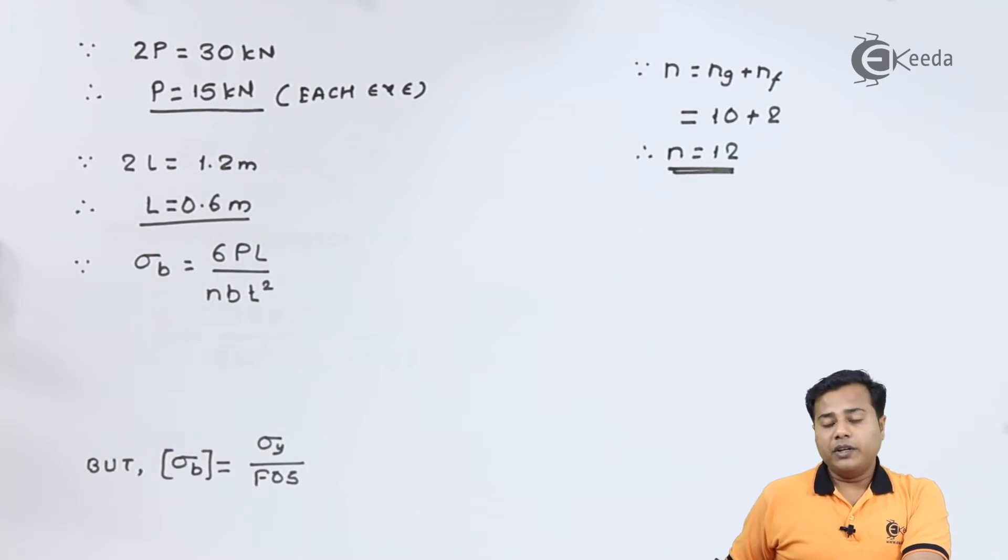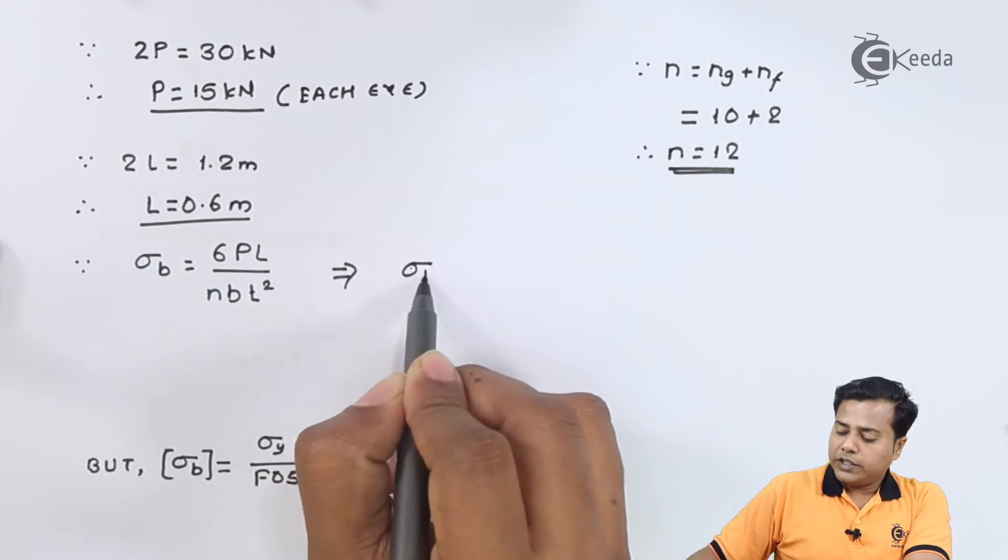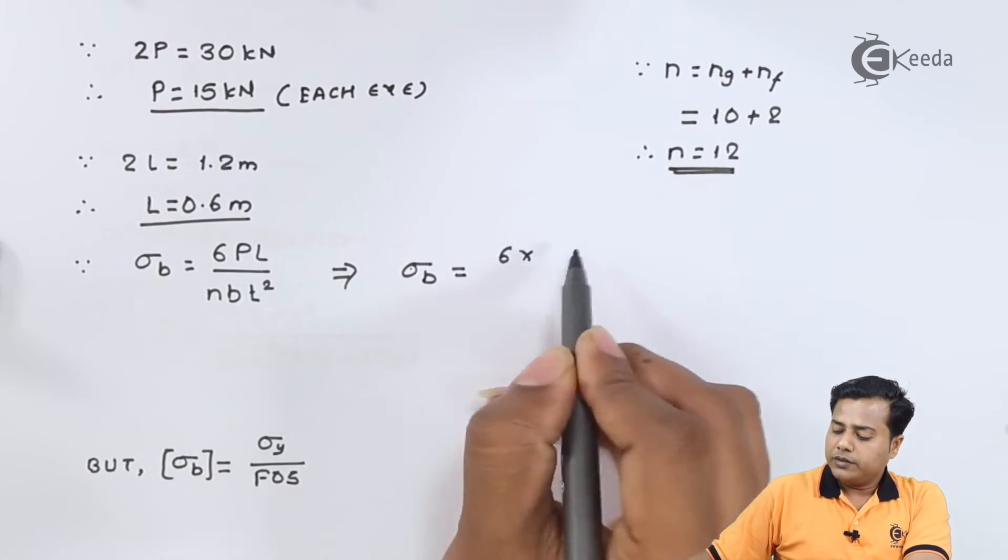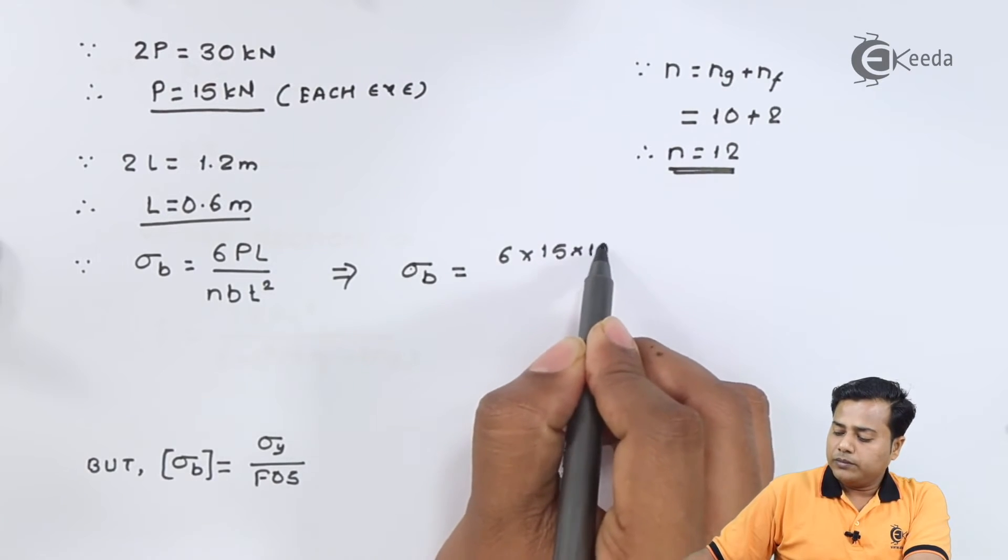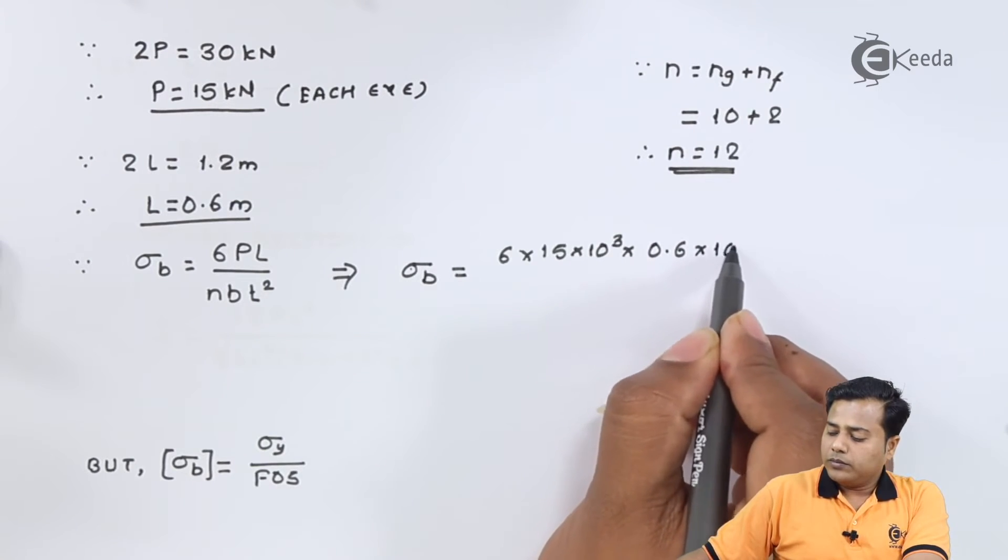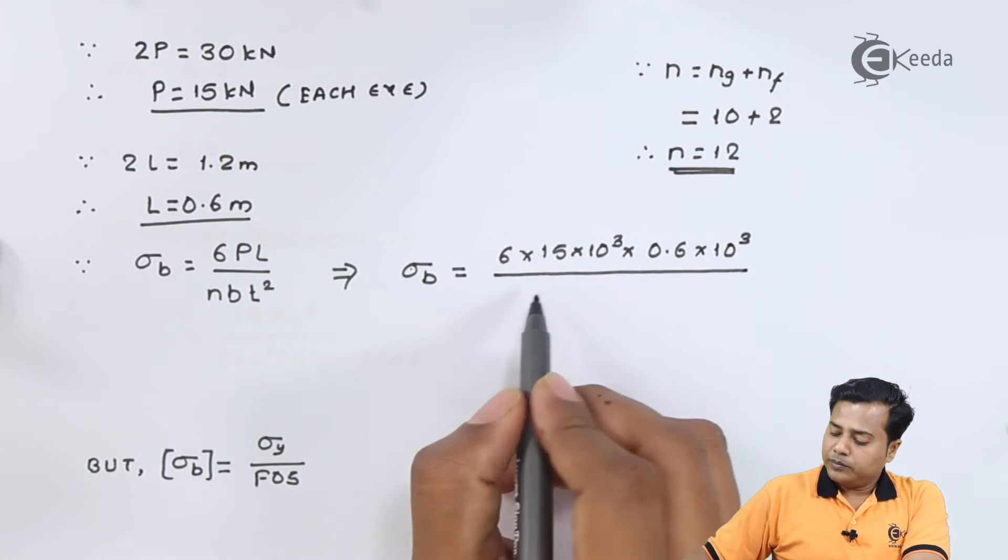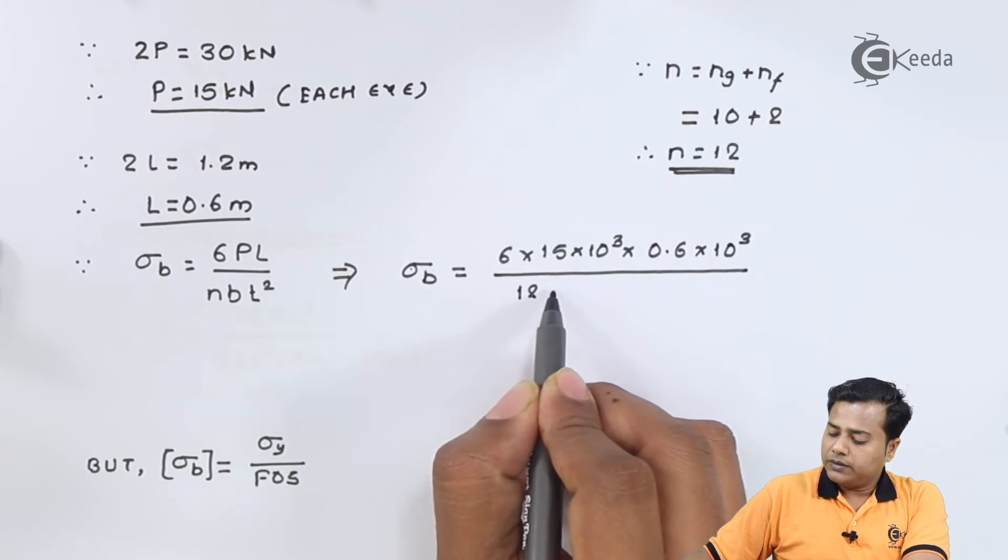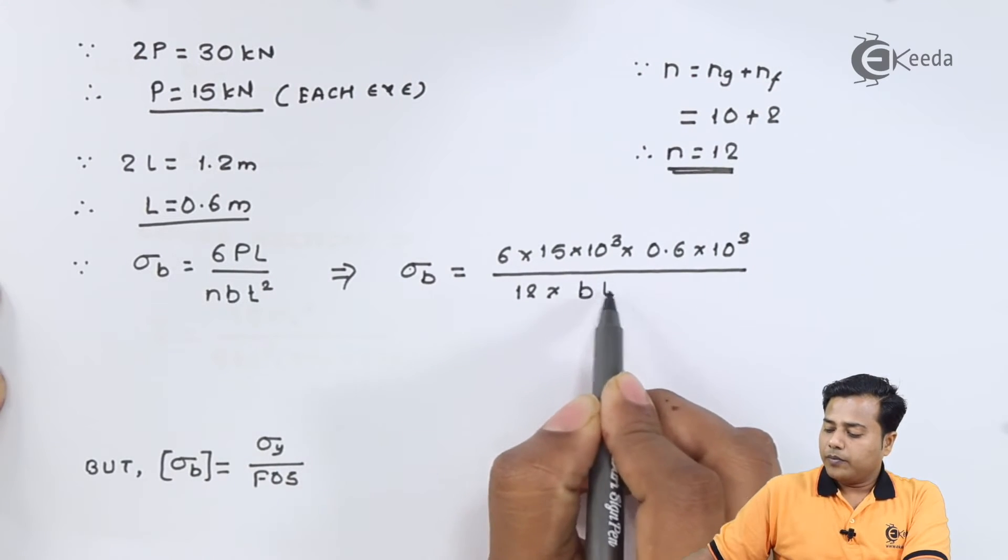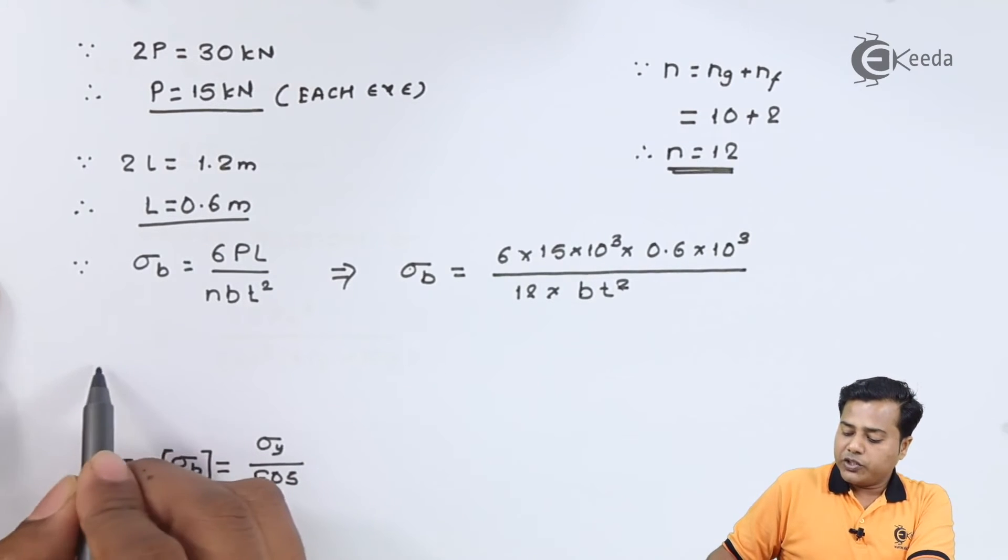We already know an empirical relation where the bending stress is equated with this particular factor and therefore sigma b equals 6 times 15 kilonewton times 0.6 meter divided by n times b times L squared. Now these are the dimensions and the factors are unknown so we will club them together for the further analysis.